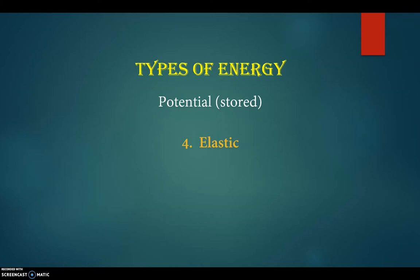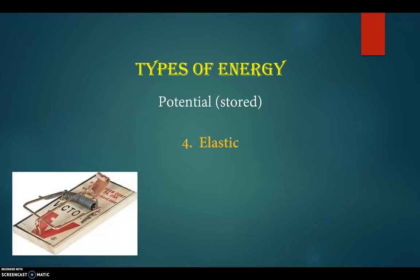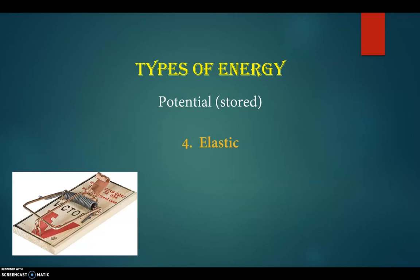Elastic potential energy — sometimes called mechanical potential energy — has been around for a very long time. A lot of kids' toys are powered by it. Anything that you can stretch, twist, or bend, and that wants to return to its original shape, has elastic potential energy. For example, a mousetrap: when you set it, you're bending that spring, and that spring wants to snap back. One of my favorite toys as a kid were rubber band powered balsa wood airplanes — you'd wind that rubber band up, storing elastic potential energy, and it would power the propeller, and those planes would fly all over the place.